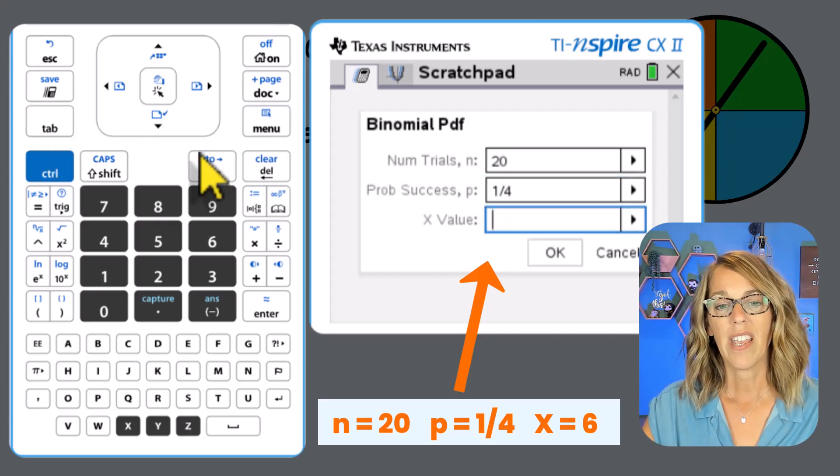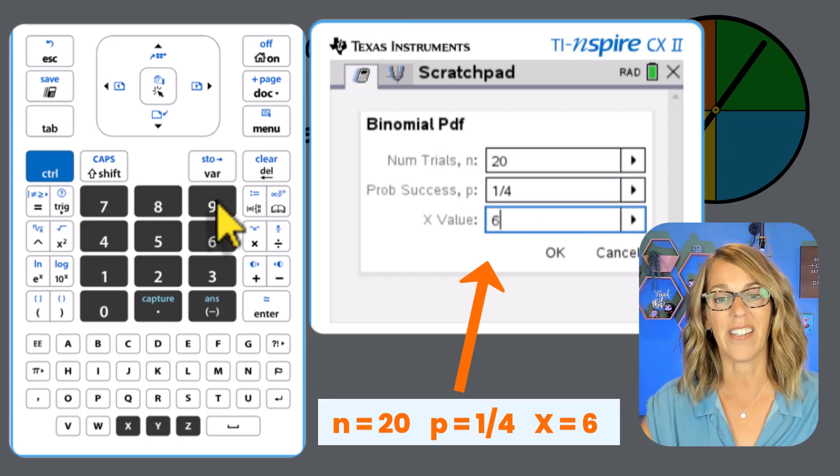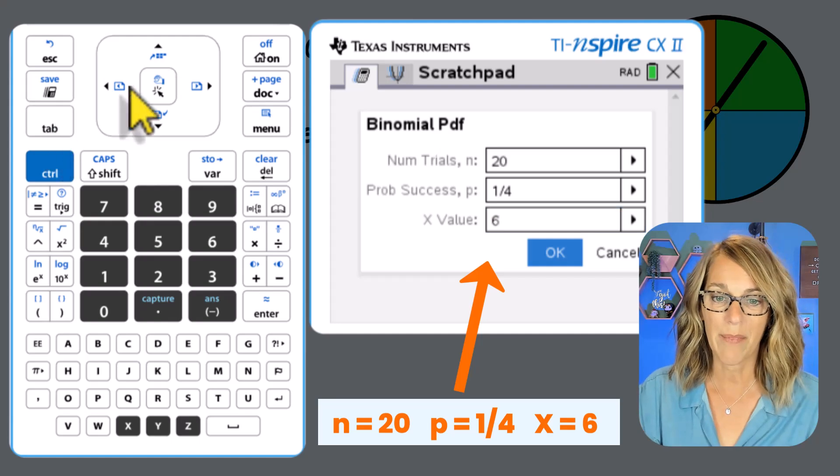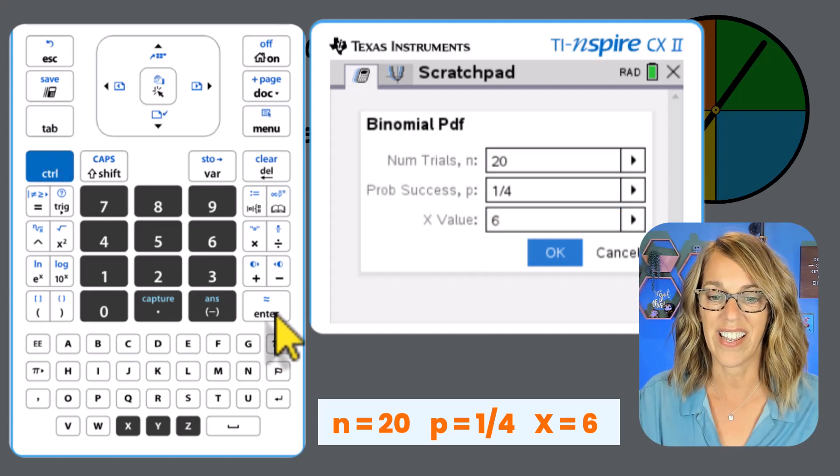Tab or arrow down. And then the x value is the number of successes, and that is equal to six. I'm going to tab down to okay, and then hit enter.